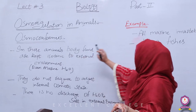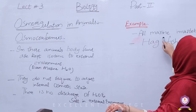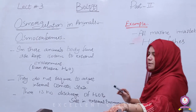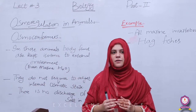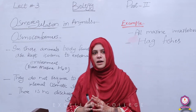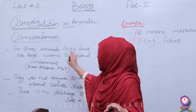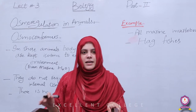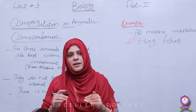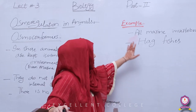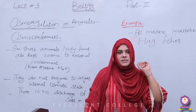इनकी osmotic concentration दोनों की — बाहिर और body की — same होती है। There is no discharge of water and salts into external environment। इनकी body को कोई नुकसान नहीं होगा, मेहनत करने की जरूरत नहीं है। Osmo Conformers की examples की बात करें तो examples हमारे पास सारे marine invertebrates और hagfishes हैं। Hagfishes हमारे पास snake-like होती हैं। ये specific place पे रहेंगे — एक खास जगह होगी जहाँ पर इनकी body और बाहिर का environment same हो।